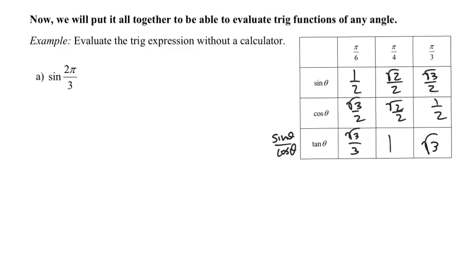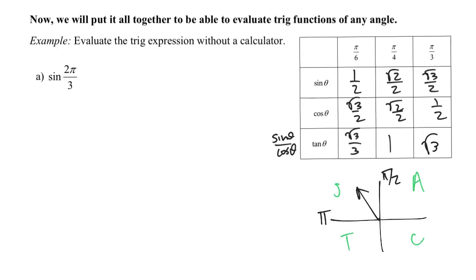You're going to want to have this table handy for all of these problems as we practice here. So here's how I answer what is sine of two pi over three without my calculator, essentially in my head. The first thing I need to determine is what quadrant this angle is in. Two thirds pi is going to be between pi over two and one full pi, so this is going to be in quadrant two. My acronym says all students trust castle, and sine is positive in quadrant two, so the answer is going to be positive.